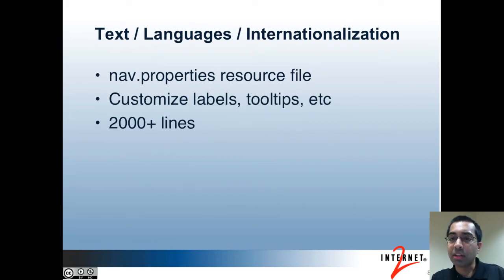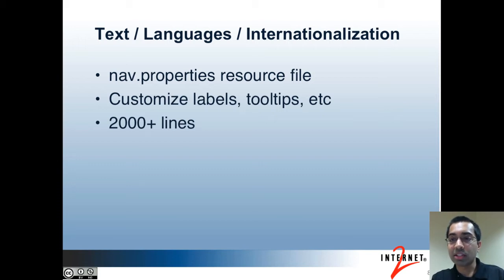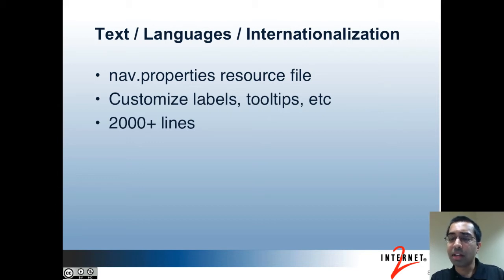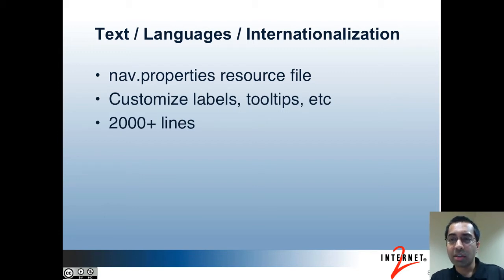Both the admin and light UIs allow you to customize the text that is displayed on the screen. There's a nav.properties file that contains all the text. For instance, if you want to change the label next to a button, the button text itself, or maybe a tooltip, you can adjust the text in nav.properties. If you want to display all the text in another language, that's also possible. However, because there are more than 2,000 lines of text in this file, translating to another language is not very easy, but it is possible and has been done by other deployers.